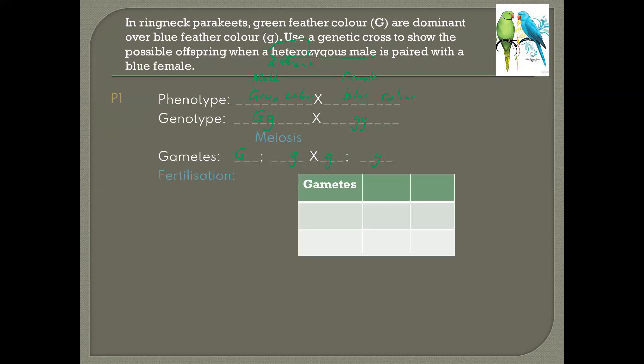Then for fertilization, you could draw a Punnett square here, and then we'd put two of the alleles from the one parent. This time, it's the male on the left-hand side, we put those alleles, the capital G and the small g on the one side of the Punnett square. And then the alleles of the other parent, which is the female here, it's a small g and a small g.